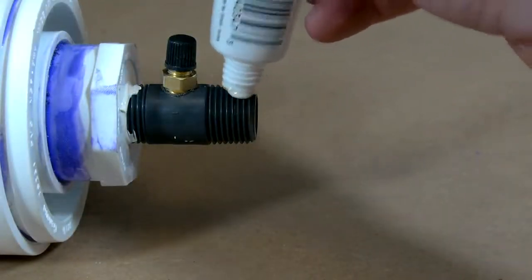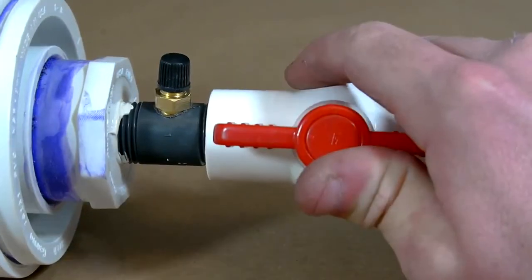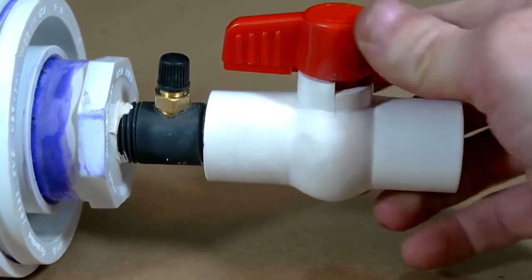With a little more thread paste on the other end, the 1.5 inch ball valve can now be attached to the end of the cannon and the whole thing can be set aside to begin work on the piston.